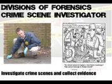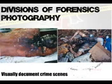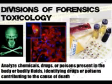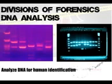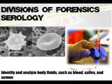Crime scene investigators, as portrayed by the show CSI, investigate crime scenes and collect evidence for further processing. The photographer visually documents the crime scene. The forensic toxicologist examines body fluids and organs to determine the presence or absence of drugs and poisons. DNA profiling, also called DNA testing, DNA typing, or genetic fingerprinting, is a technique employed by forensic scientists to assist in the identification of individuals on the basis of their respective DNA profiles. Forensic serology identifies and analyzes body fluids such as blood, saliva, and semen.